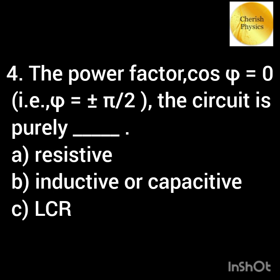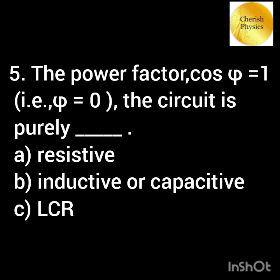If the power factor cos phi is equal to zero, then the circuit is purely dash. If the power factor cos phi is equal to one, then the circuit is purely dash.